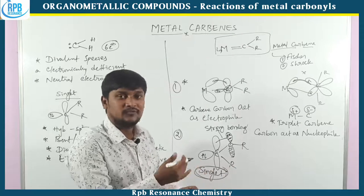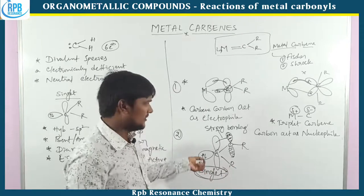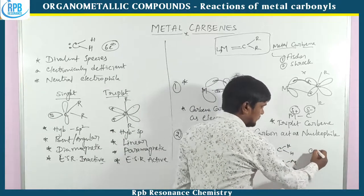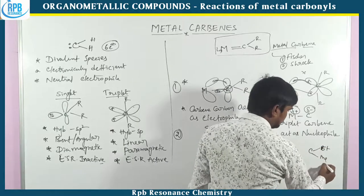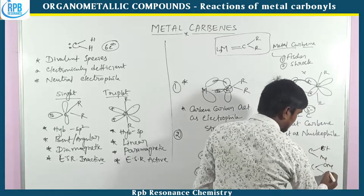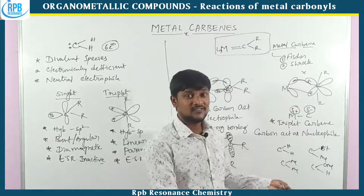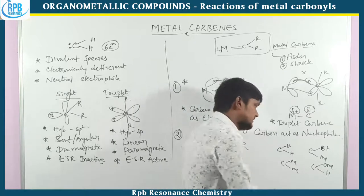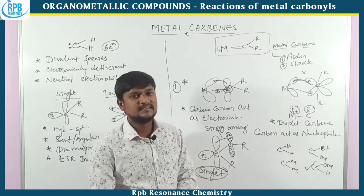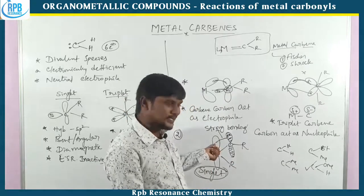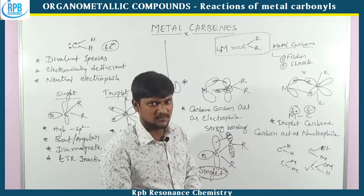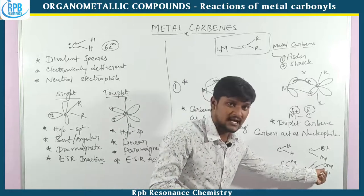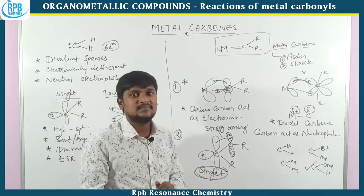This is the basic introduction — how to find whether it is singlet carbene or triplet carbene. Now I'll do a very simple example with H, H, methyl, methyl. Among these four carbenes, which one is singlet carbene? The carbene having the heteroatom acts as singlet carbene. Triplet carbene cannot stabilize adjacent to heteroatoms, but singlet carbene can stabilize adjacent to heteroatoms.